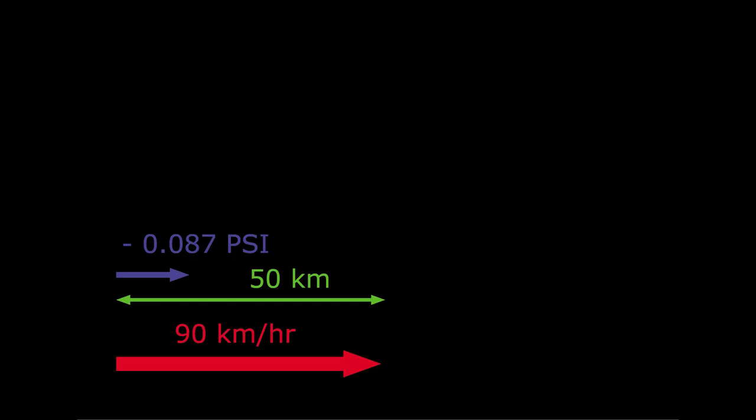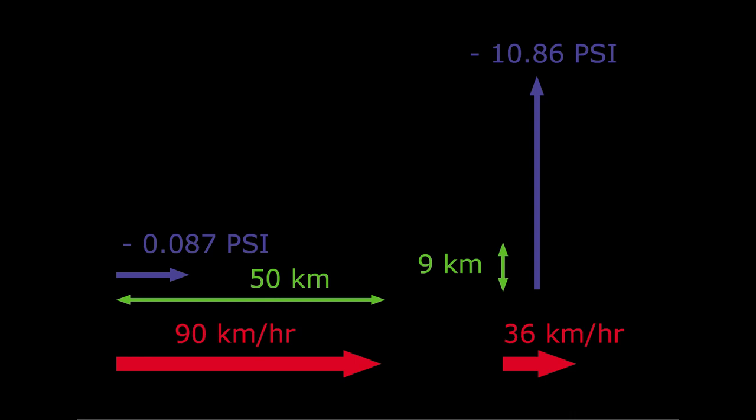So we have storms, causing wind speeds of 90 kilometers per hour, over an atmospheric pressure difference of 0.087 psi, over a distance of 50 kilometers. And we have winds resulting from an atmospheric pressure difference of 10.86 psi, over a distance of almost 9 kilometers, with speeds of around 36 kilometers per hour, blowing in the wrong direction. What is the difference here?